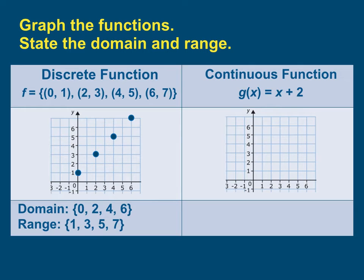Let's move over to the continuous function g of x, so this is some function of x which equals x plus 2. In other words, whatever your input value is or your x value, add 2 to it to get your y value. So let's use 0 for our x value. Then our function will be g of 0 equals 0 plus 2, or 2. So we will graph 0, 2.